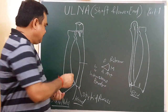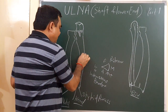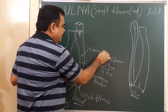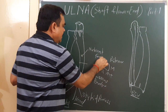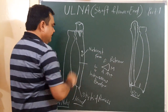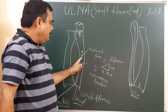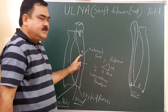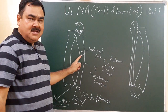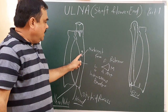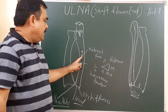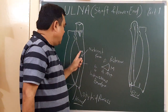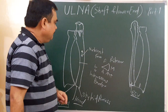The anterior surface has a foramen, known as the nutrient foramen. The direction of the foramen is upward, and an artery passes through it — a branch of the anterior interosseous artery. This nutrient branch passes through to the upper side, so the direction is upward.